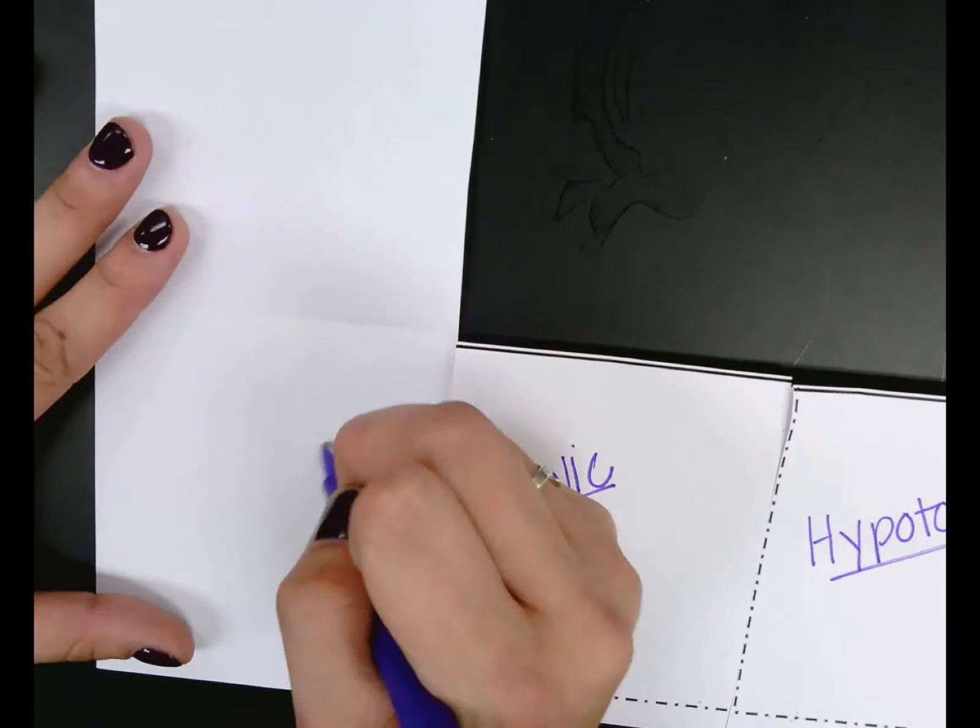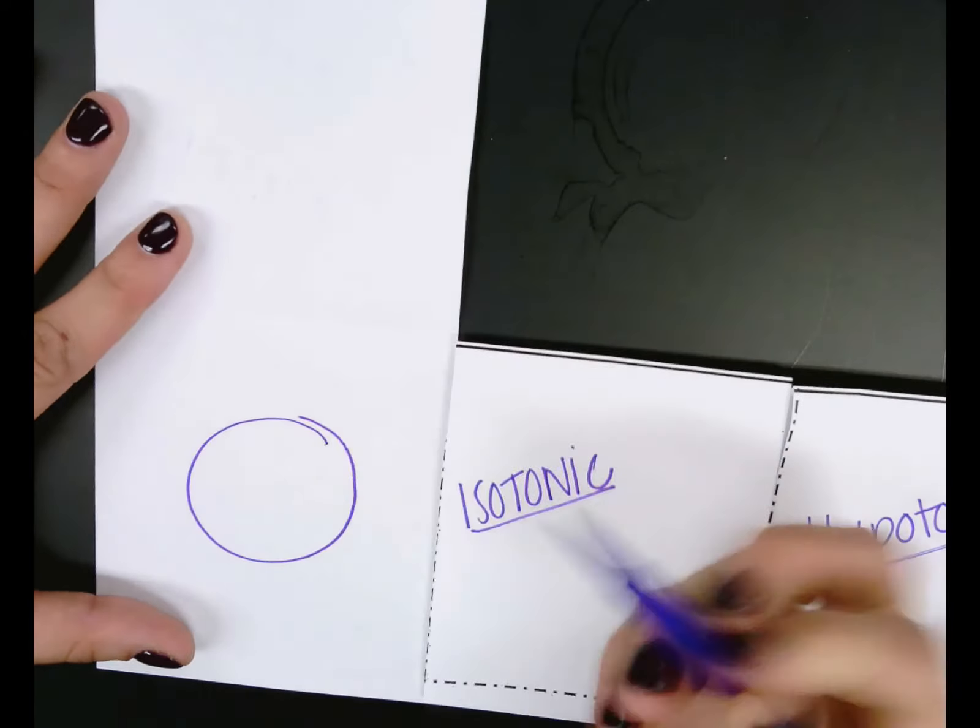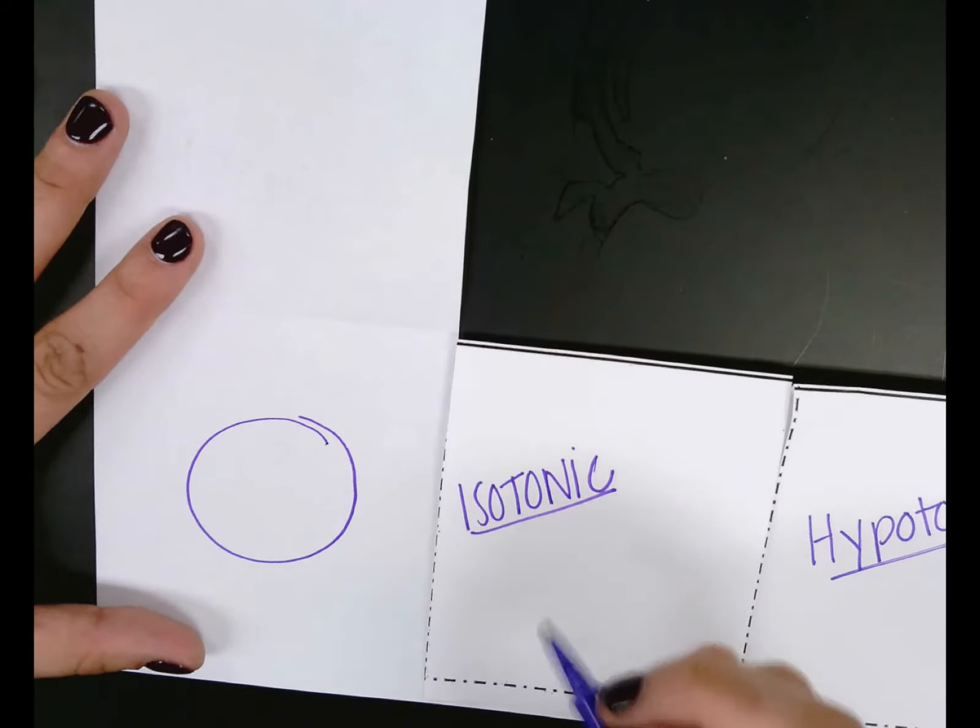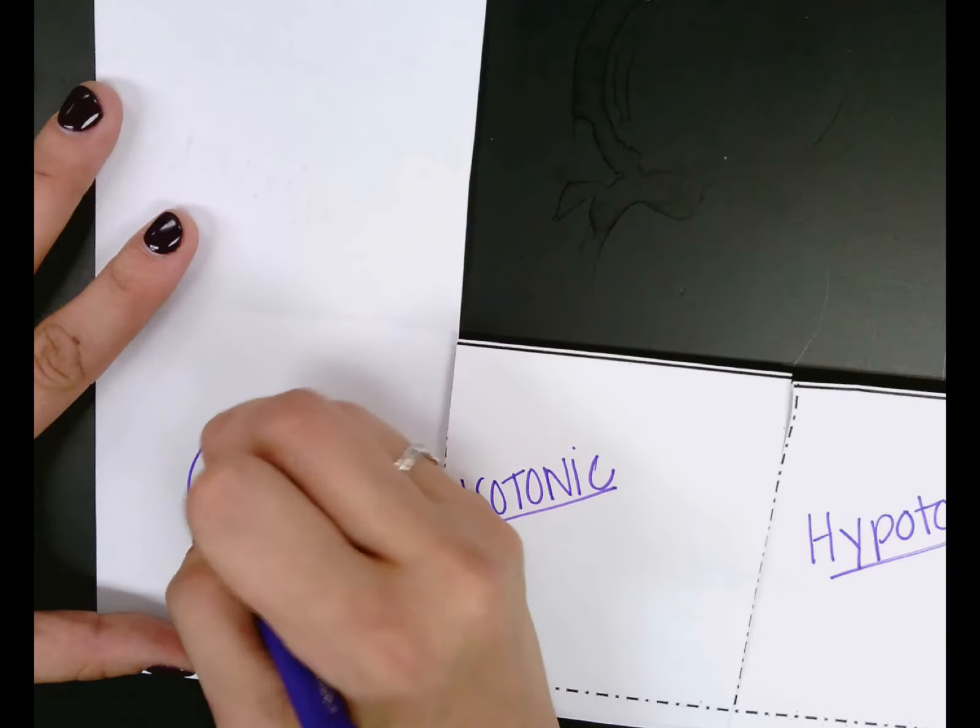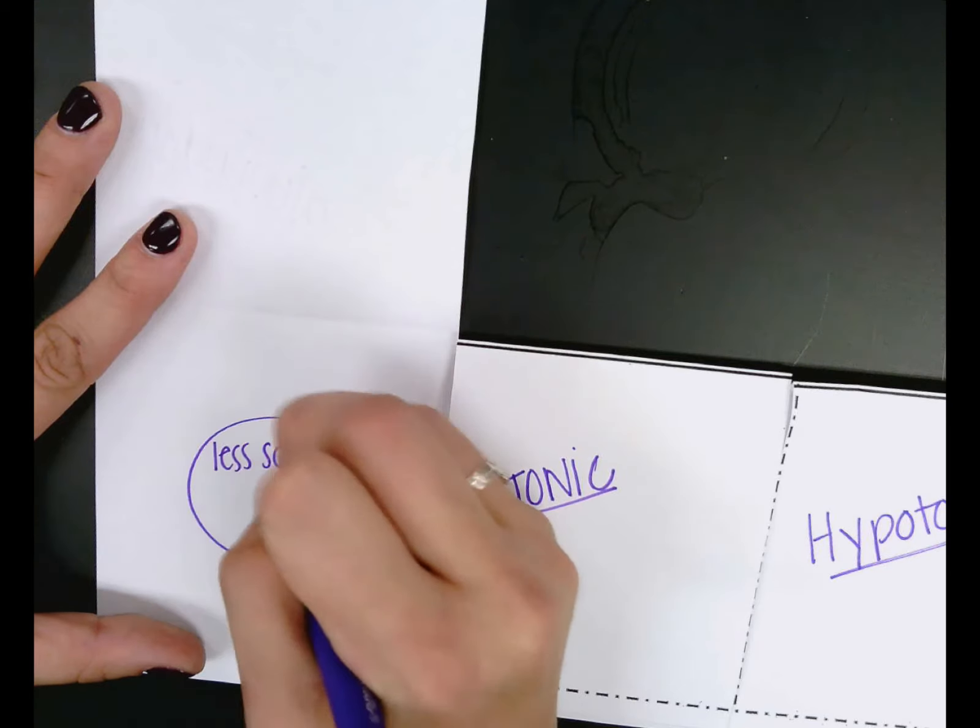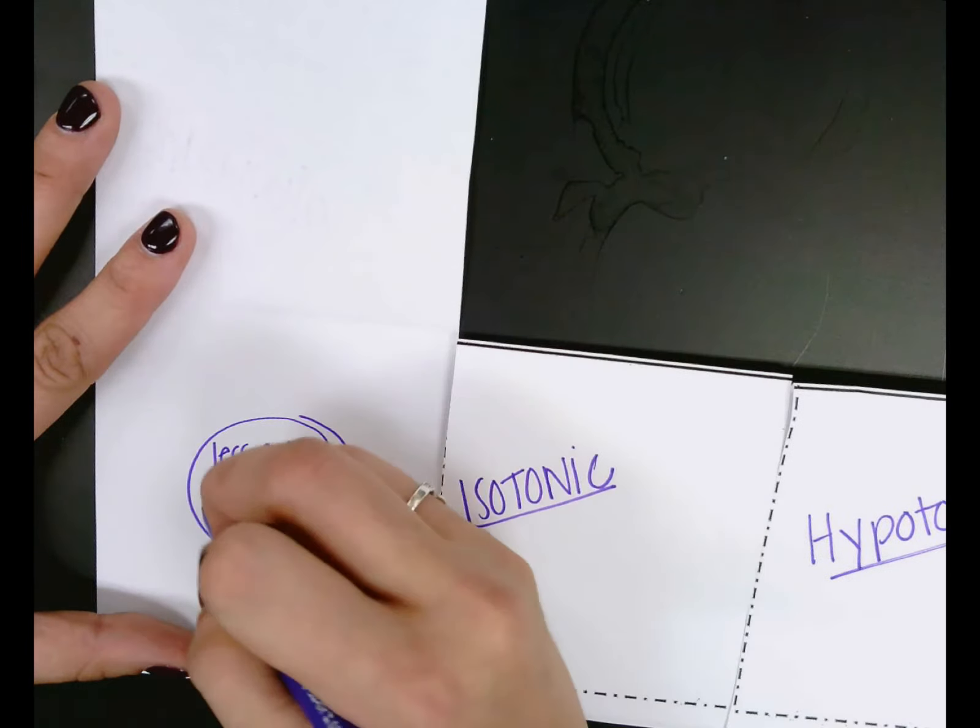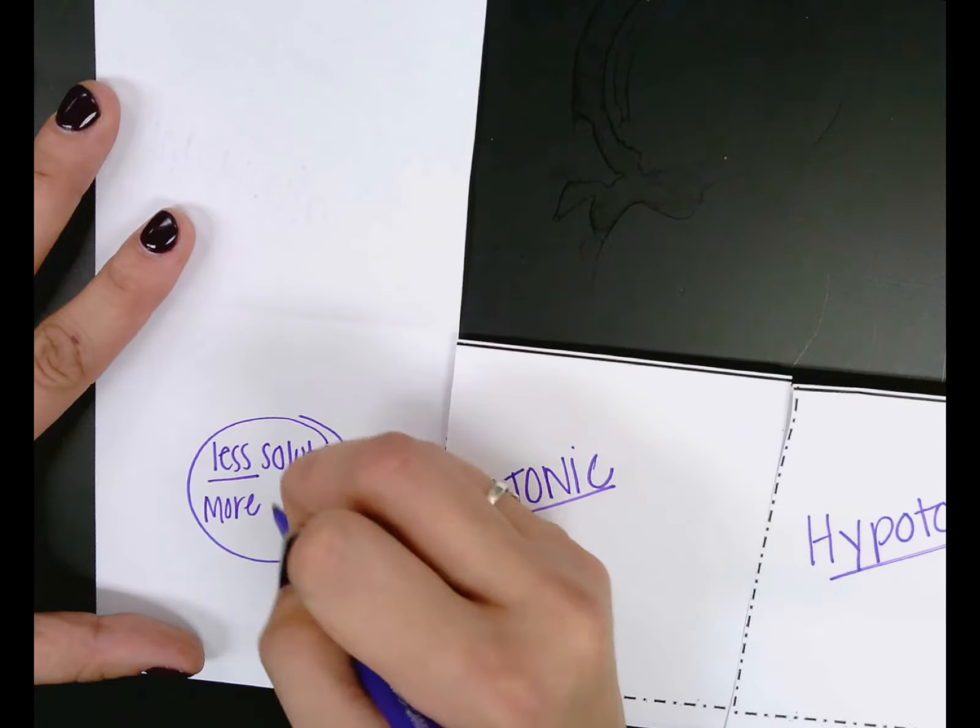So first, we've got a cell, and inside that cell we have less solute, so that's like salt, and we have more water.